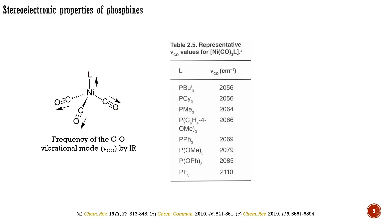In a classic study, Tolman measured the values of IR-stretching frequencies of CO ligands in corresponding nickel-carbonyl complexes using infrared spectroscopy, where L is a phosphine or phosphite being studied. The values of IR-stretching frequencies depend on the degree of backbonding to the CO ligands, which depends on the electron density of the metal center, which in turn relies on the electron-donating ability of the phosphine. Some representative frequencies are presented in the table. The higher the wave numbers, the weaker the donation from the L ligand. These data show that tri-tert-butylphosphine and tricyclohexylphosphine are the strongest donors, while phosphorus trifluoride is the weakest donor in this set.